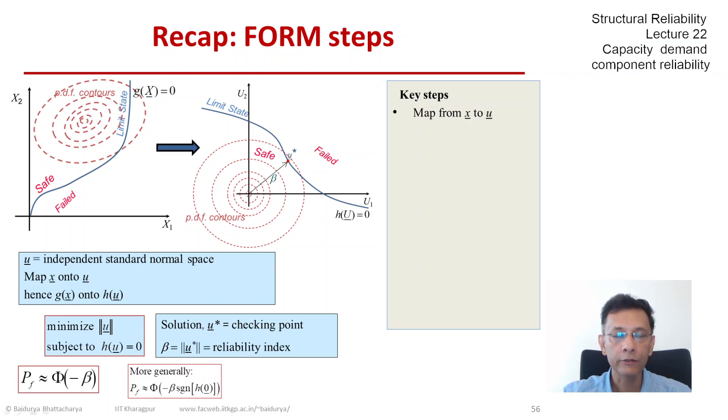The second moment transformation or the Hassefer-Lind transformation, the full distribution transformation, the Nataf transformation, the Rockwitz-Fiesler transformation and the Rosenblatt.